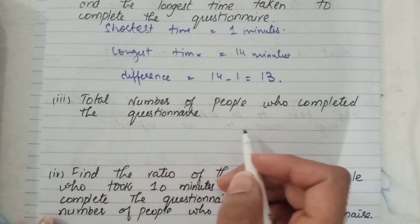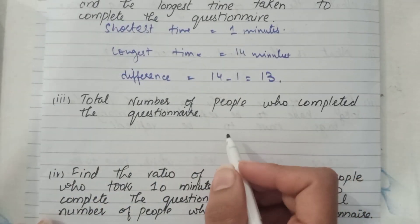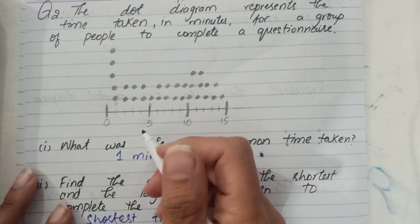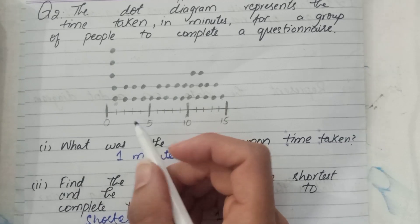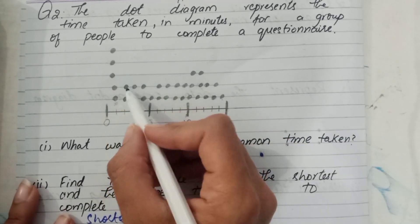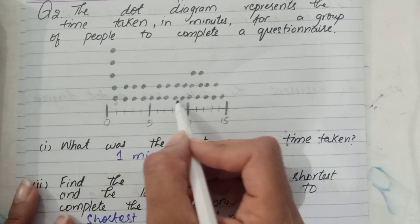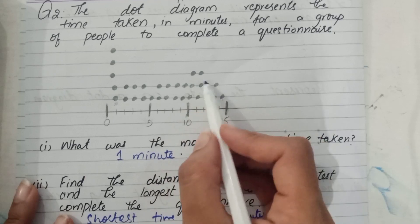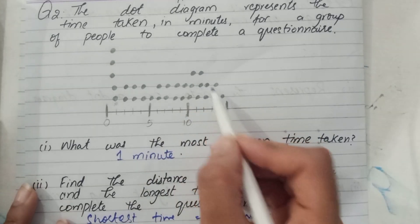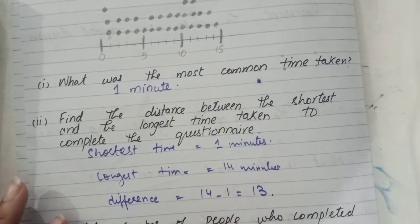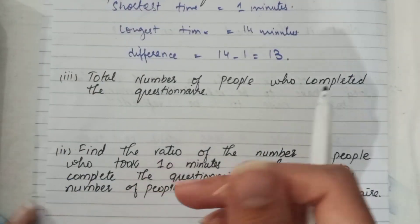Part three: total number of people who completed the questionnaire. We can find this answer by counting the dots — counting gives us 31. So the total number of people is 31.